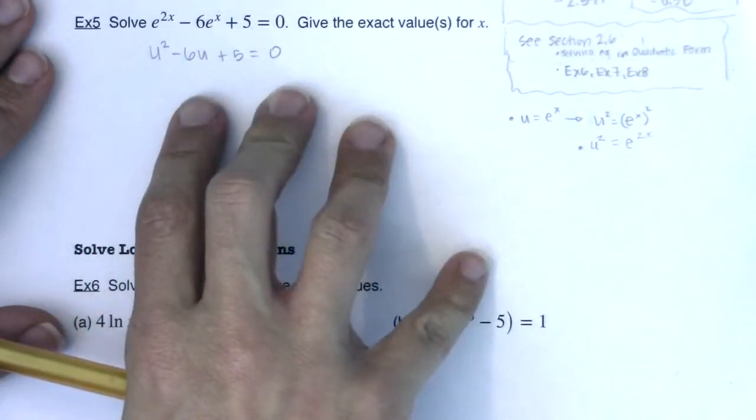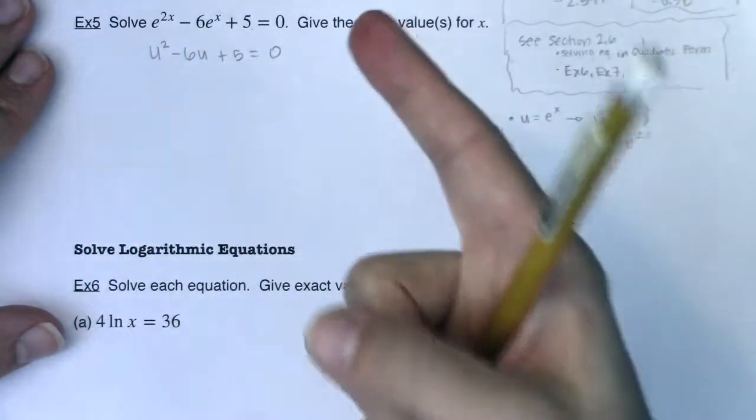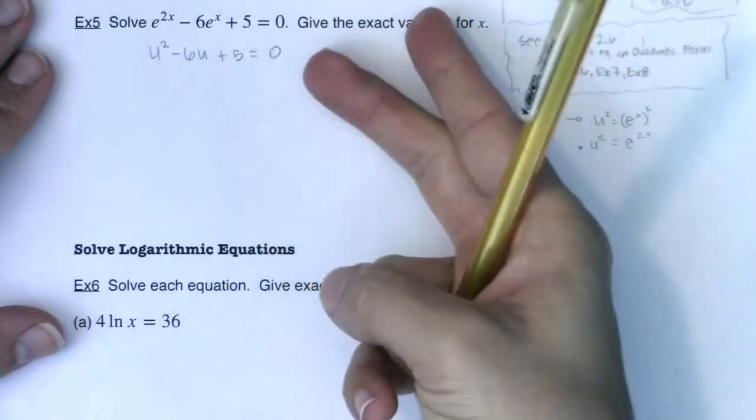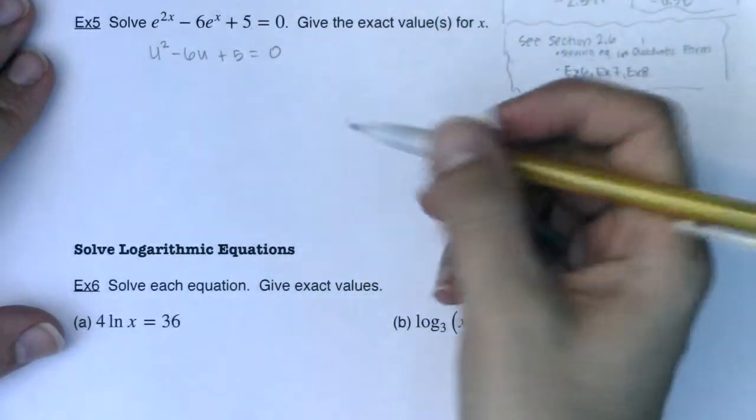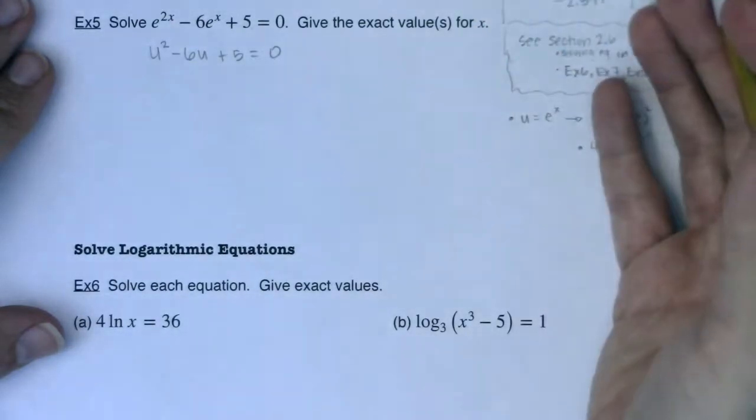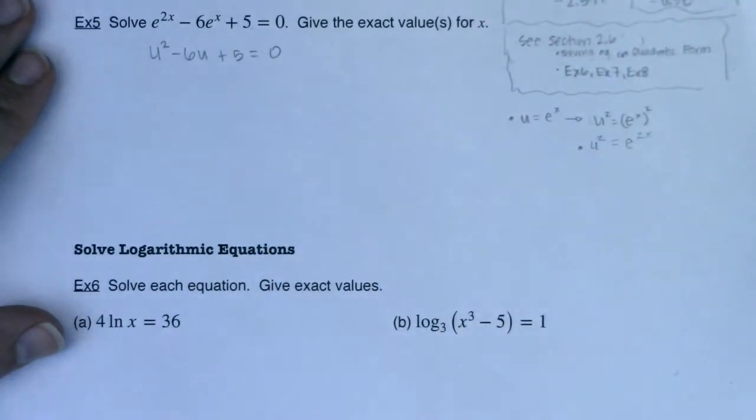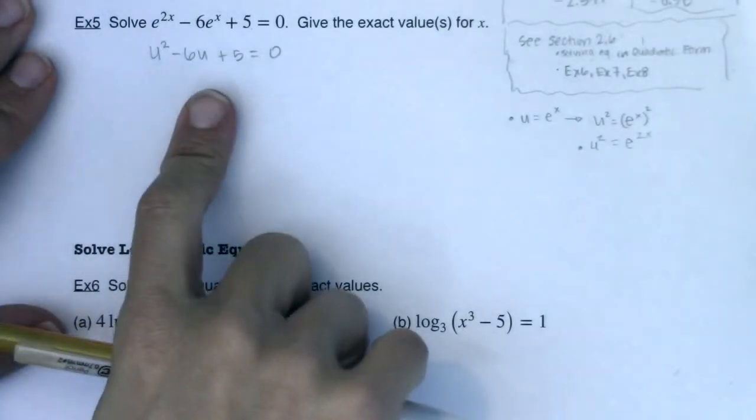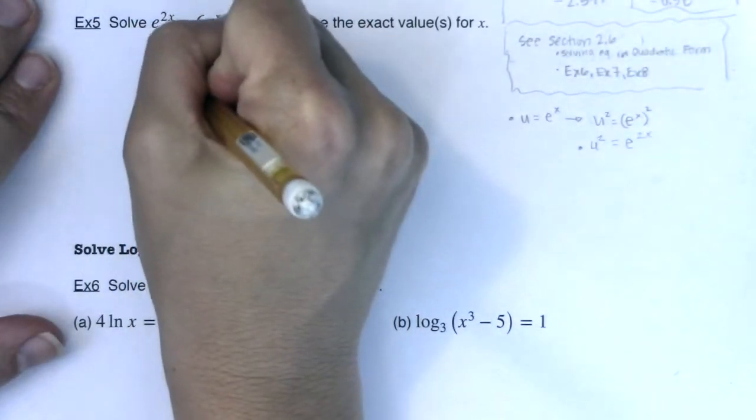Now I have an equation in quadratic form. And we have three ways of solving quadratic equations. We can factor, we can complete the square, or we can use a quadratic formula. Now I like to factor first if I can, and then if I can't, I'll go ahead and I'll typically use the quadratic formula.